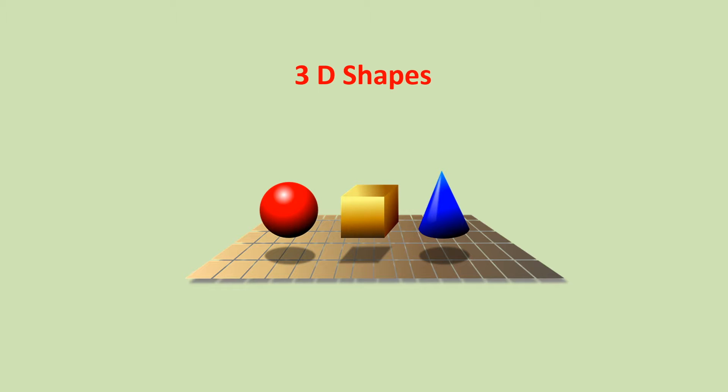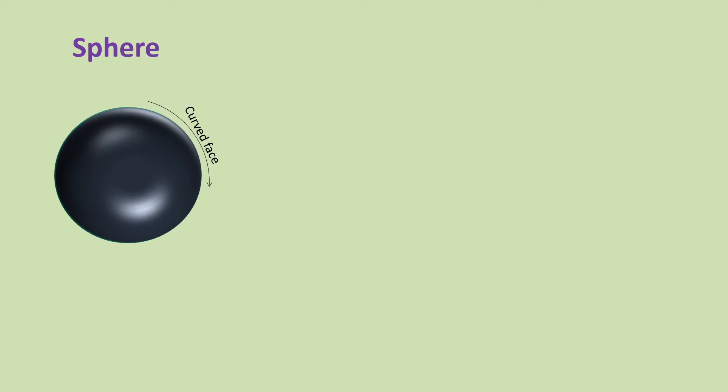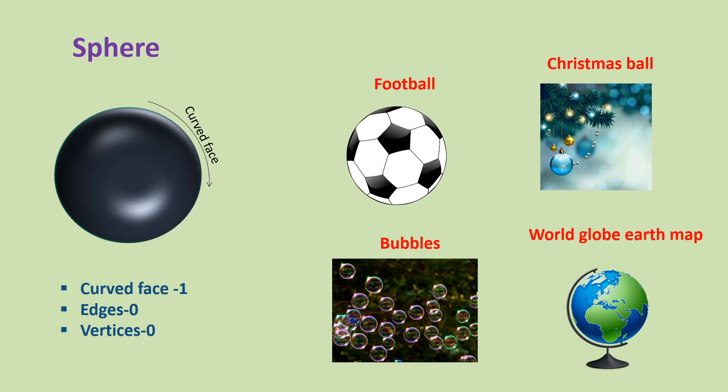In the previous video we learned about two-dimensional shapes. Let's learn three-dimensional shapes. A very common and simple 3D shape is sphere. Sphere has one curved face like a circle. It has no edges and no vertices.